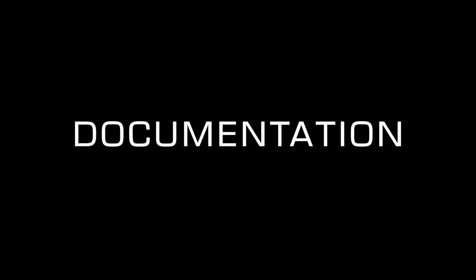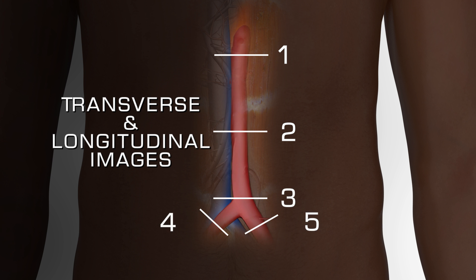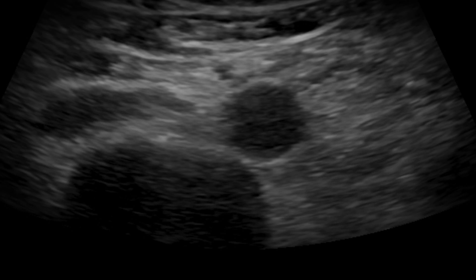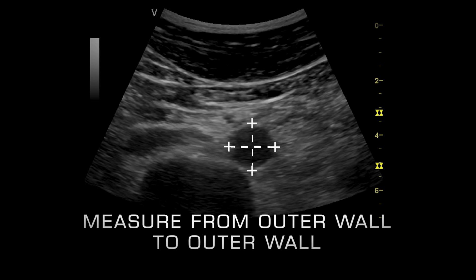When feasible, the examination should include the following: transverse and longitudinal views of the vessel at the proximal level near the diaphragm, at the mid-level, and at the distal end; and transverse and longitudinal views of the left and right common iliac arteries at 1.5 centimeters distal to the bifurcation of the abdominal aorta. In each image, label the abdominal aorta or iliac artery and measure its diameter.